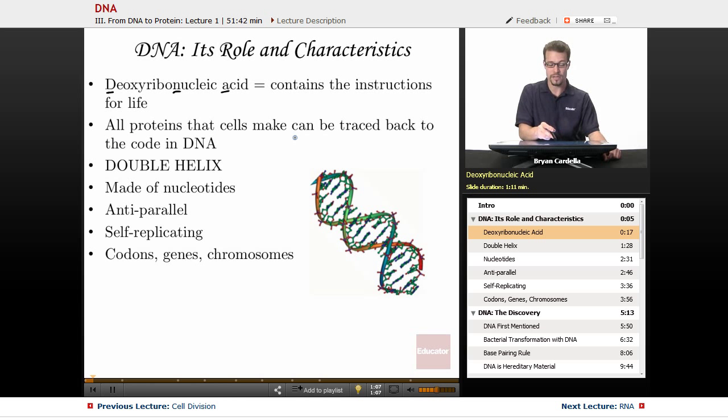All proteins that cells make can be traced back to the code in DNA. So really, DNA codes for protein. Proteins are so important in cells, very prolific in terms of what they do structurally and what they do chemically. Proteins really are how DNA is expressed in cells.